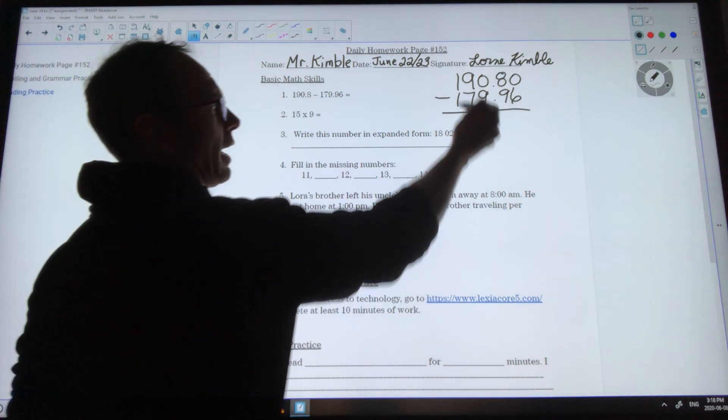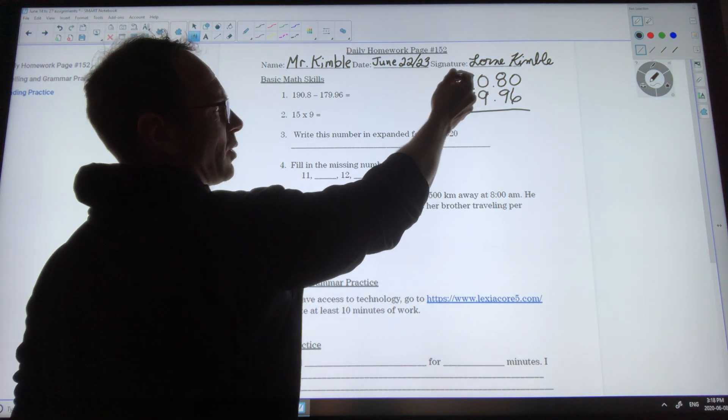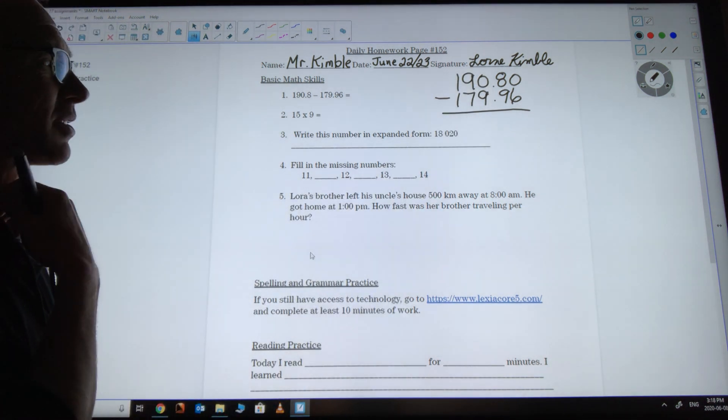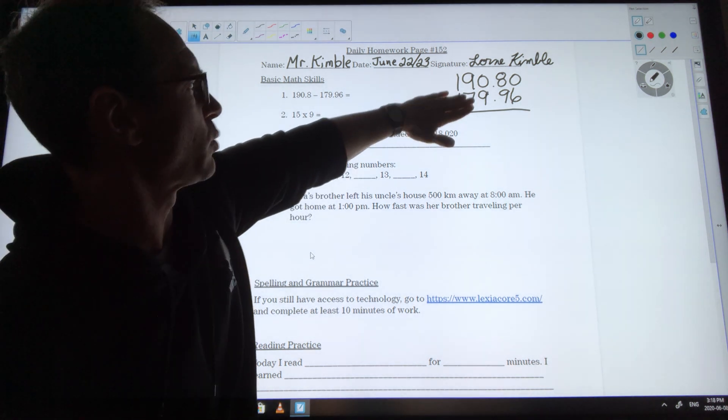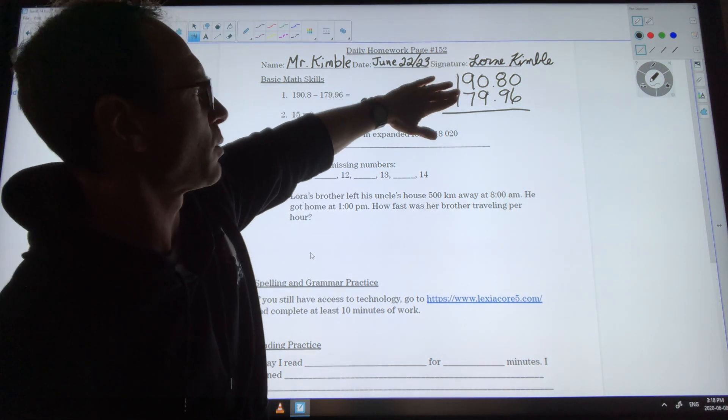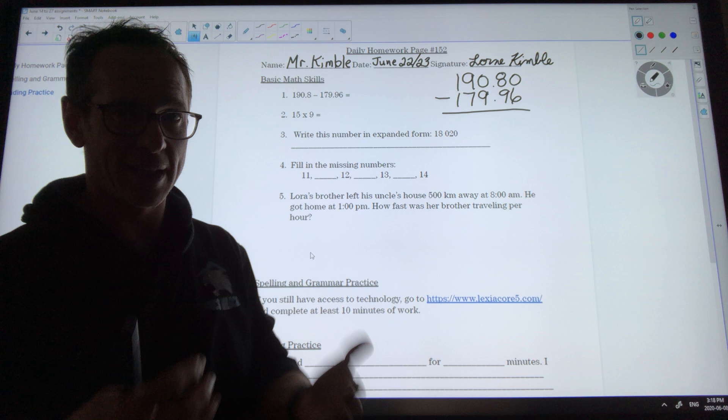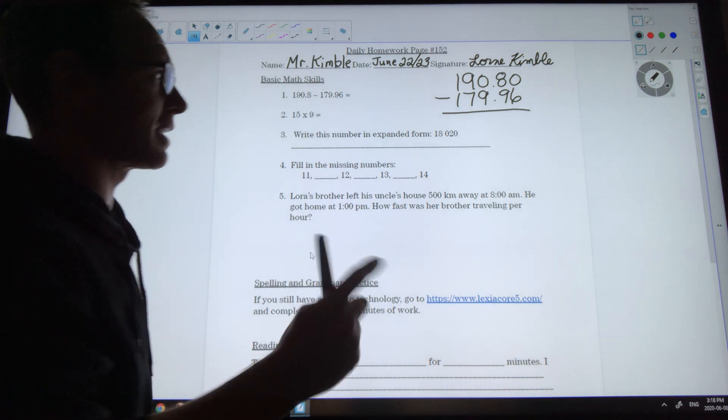Now I know my answer in the end is going to be somewhere around 10 or so. Even if you thought this was just 190 minus 180 is 10, so it's not going to be far off of that. Let's find the exact answer.